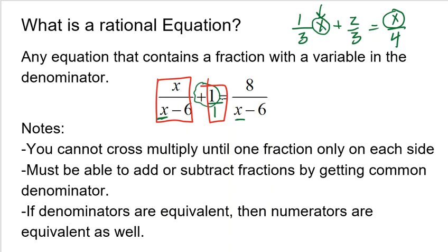Another key thing: if denominators are equivalent, then the numerators are also equivalent. There's a simple math rule that says if you have x over r and y over r — if the denominators are both the same, then it implies that the numerators are also the same. So one way to instantly get rid of fractions is if your denominators are the same, then all you have to worry about is making sure that the numerators are the same. That's another technique that might be very helpful.